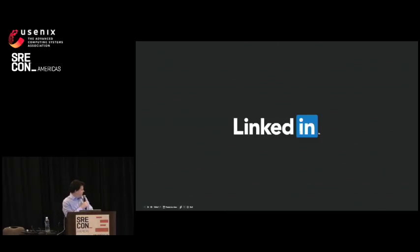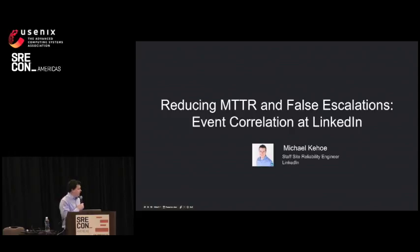So, the program Chess gave me a bit of a hard act to follow after this morning's keynotes. But today, my name is Michael. I'm here from LinkedIn, and we're going to talk about reducing mean time to resolution, known as MTTR, and false escalations, and how we do event correlation at LinkedIn.